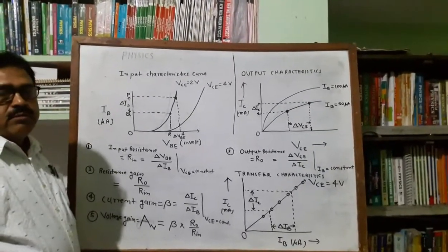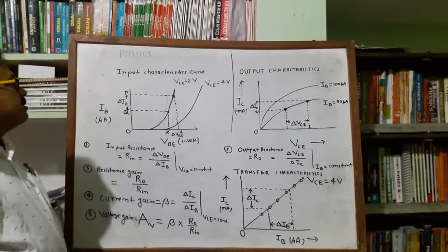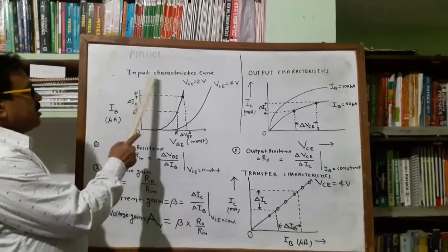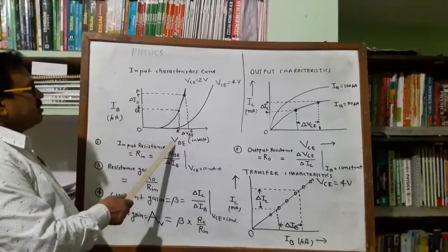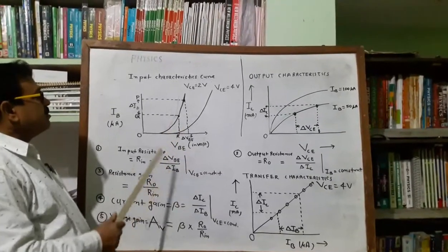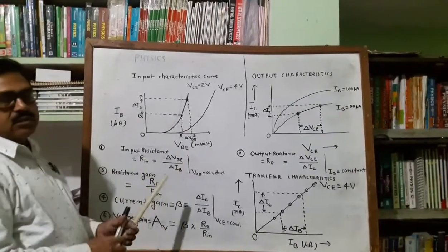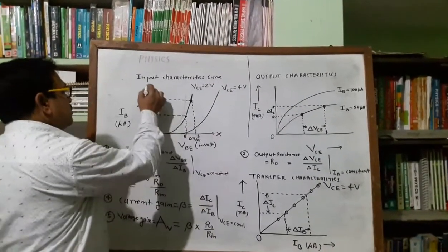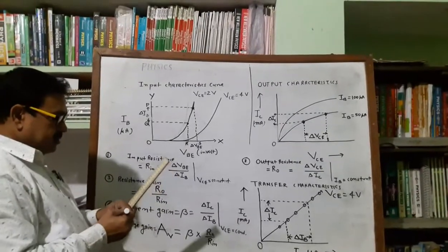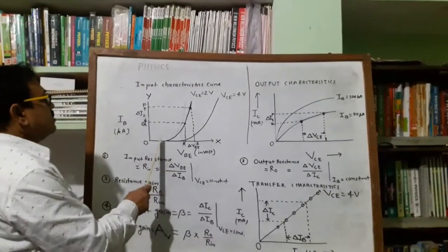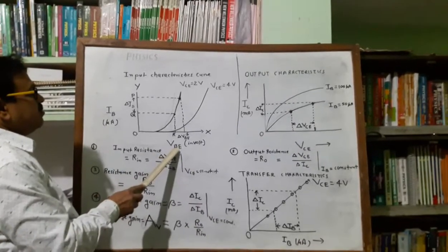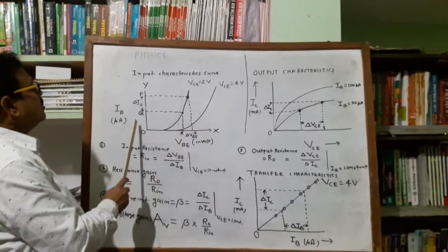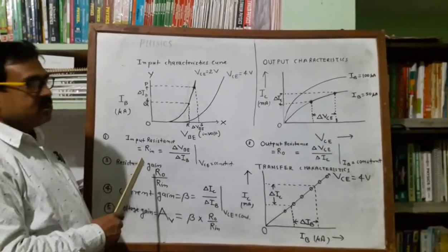Now today we will study how to draw the input characteristics. To draw the input characteristics, we have to decide the value of the base-to-emitter voltage, which is taken along the x-axis. We put all the different values on the x-axis. Base-to-emitter voltage is taken along the x-axis and base current is taken along the y-axis.